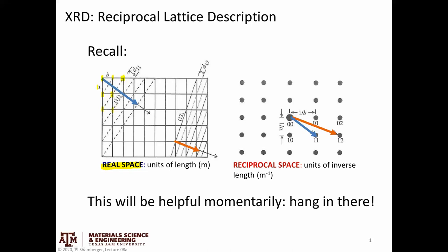So this is our lattice. We have two lattice parameters, A and B. And for some family of planes — for example, the 1-1 family of planes — we have a D spacing that separates one member of that family from another. These are all given in units of distance. In reciprocal space, each point represents a family of planes. So this point labeled 1-1 represents the family of 1-1 planes — there are only two indices because we're looking at a two-dimensional lattice. The distance from the origin to the point 1-1 is given by 1 over the D spacing of the 1-1 family of planes.